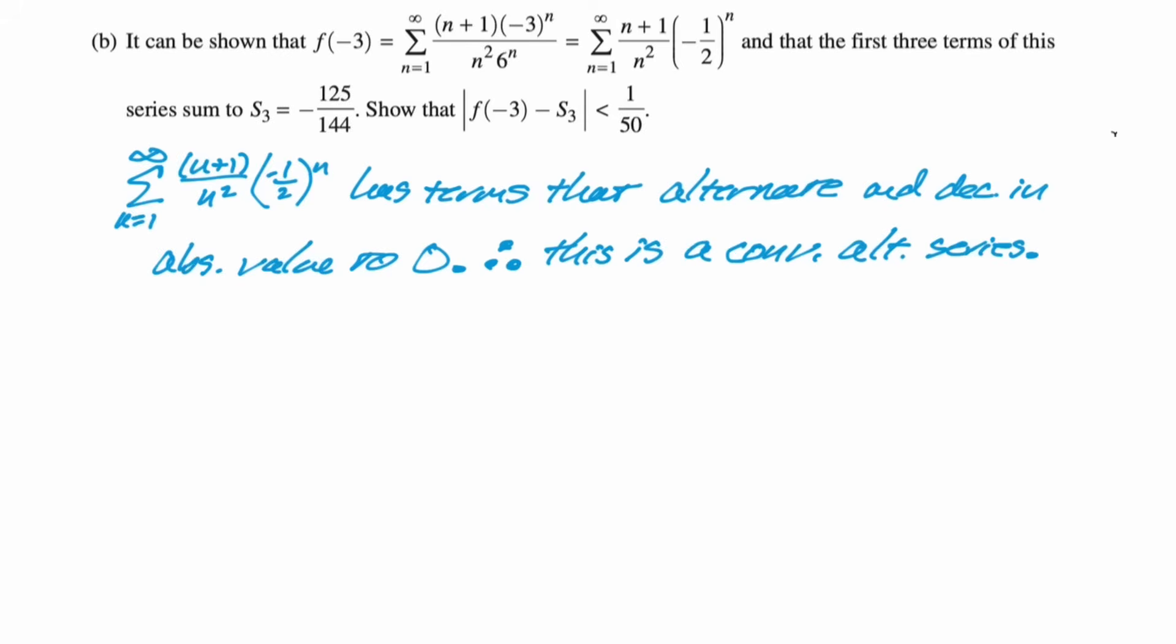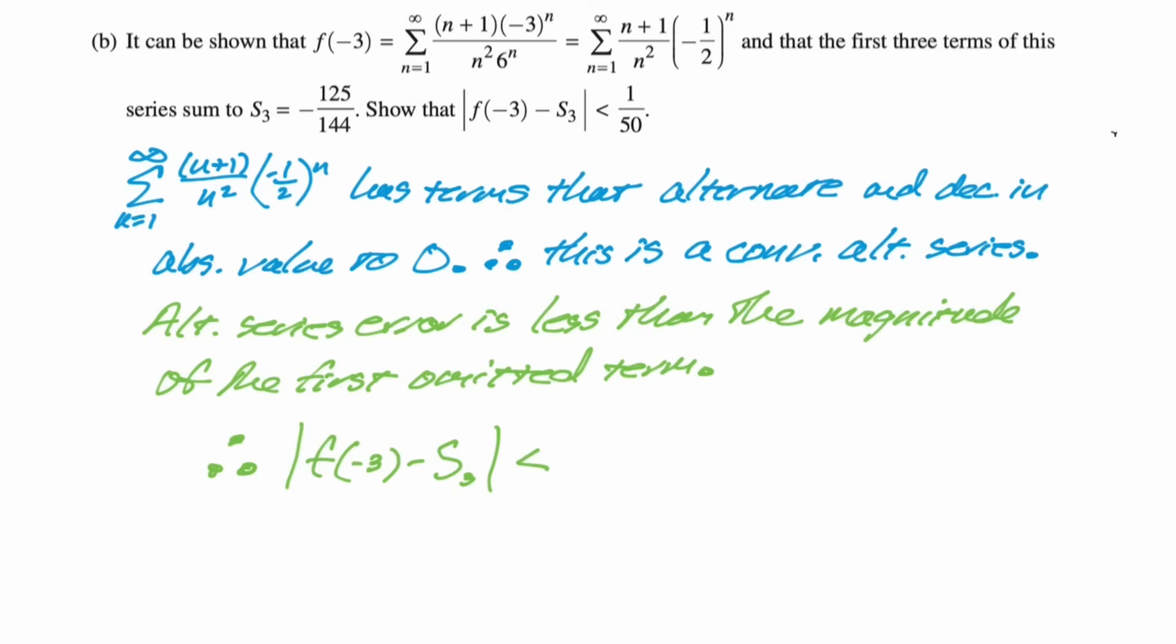So now the alternating series error is going to be, at most, the magnitude of the first term that we omitted. If we use three terms, the absolute value of the fourth term is going to be a bound on the error. So we want to say that the absolute value of f(-3) - S_3 is less than, we need to take 4 and plug it into this thing. So we're going to sub in 4. So that's going to give us (4+1) is 5, over 4^2 is 16, times (-1/2)^4.